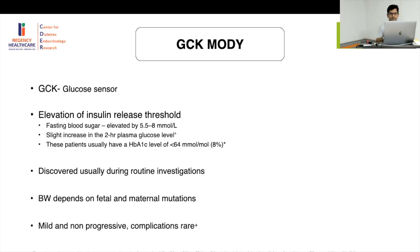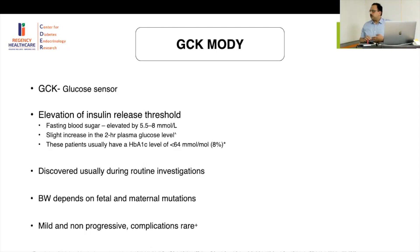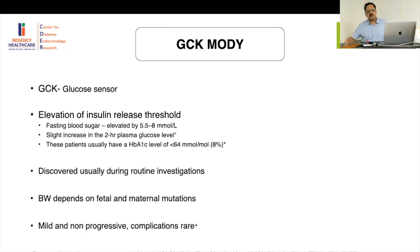GCK MODY is mild and non-progressive, and complications are very rare. If this girl comes back today with an HbA1c of 7.7, we would do nothing — we can monitor for complications, but they are rarely seen per the literature. The increase in glucose on oral glucose tolerance test is up to 2–3 mmol/L, which is 36–54 mg/dL — always below 50 mg/dL as a glucose challenge increment. So if you have somebody with mild fasting-predominant diabetes that does not increase much post-meal, start thinking of this possibility.